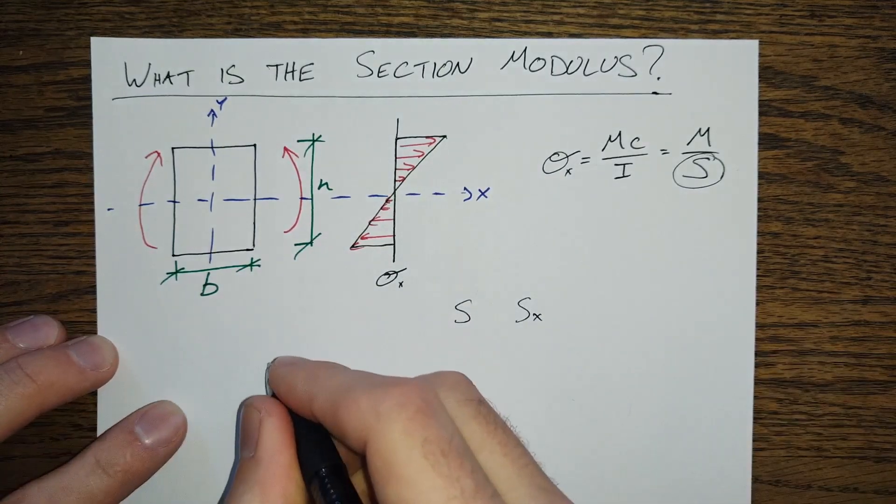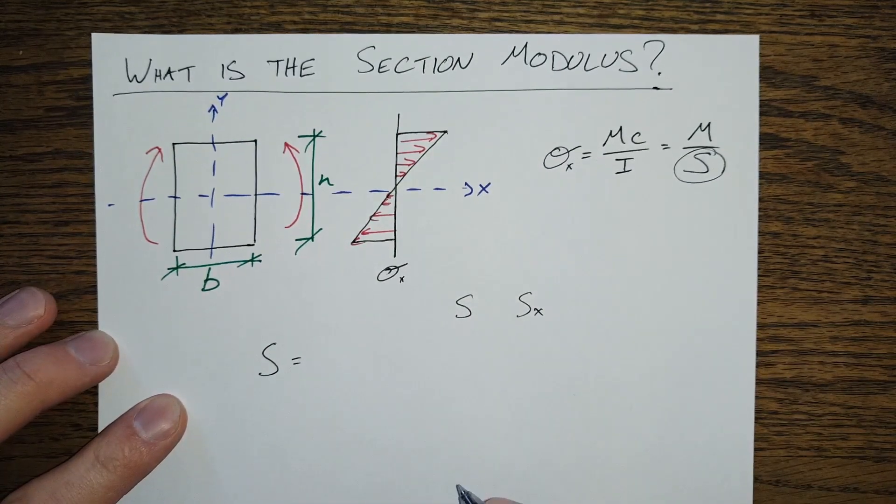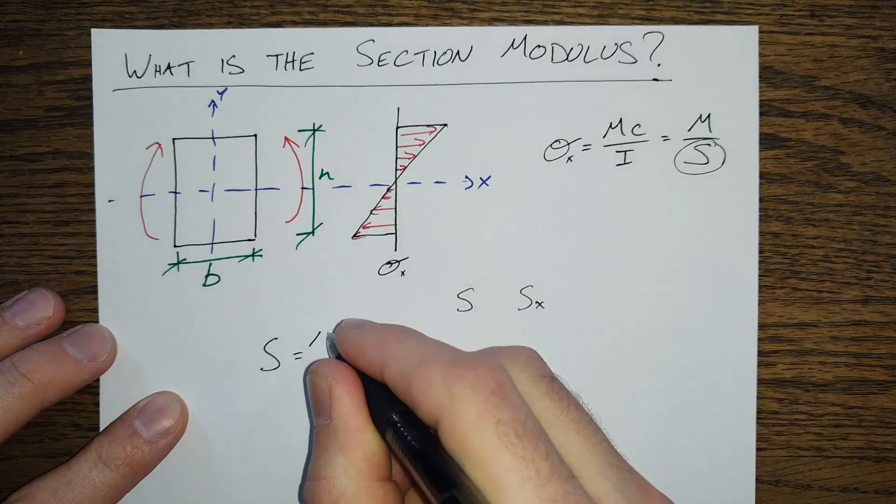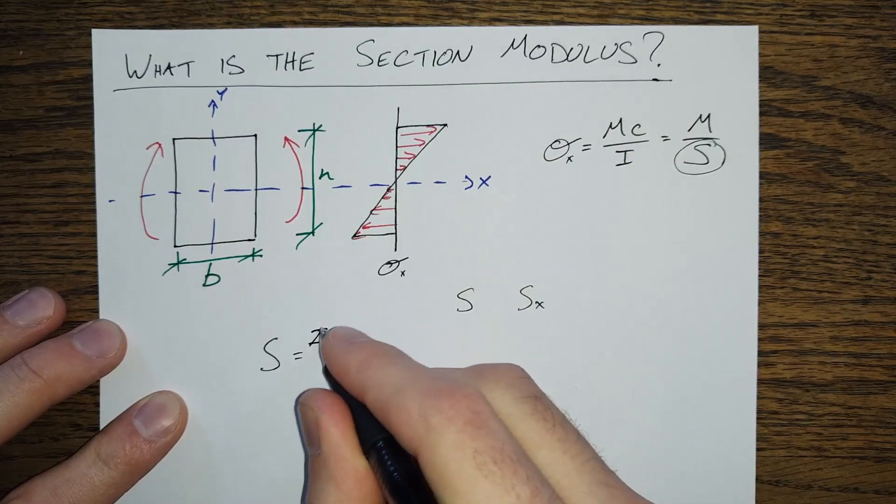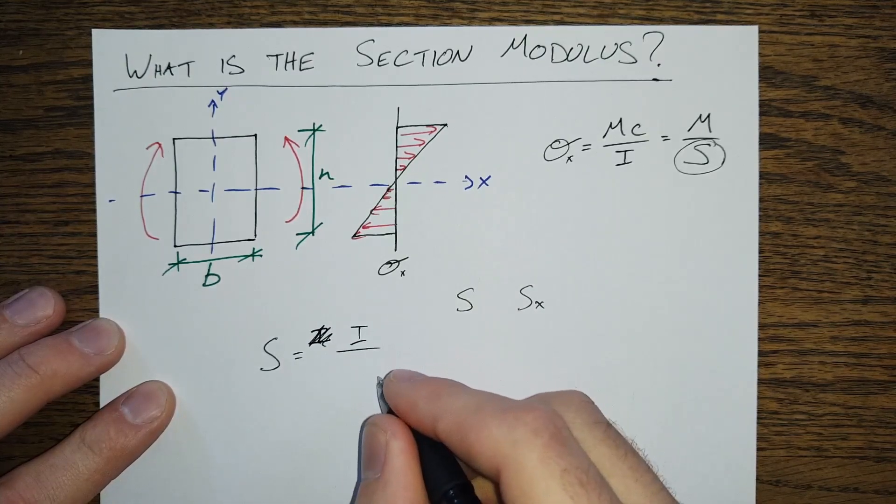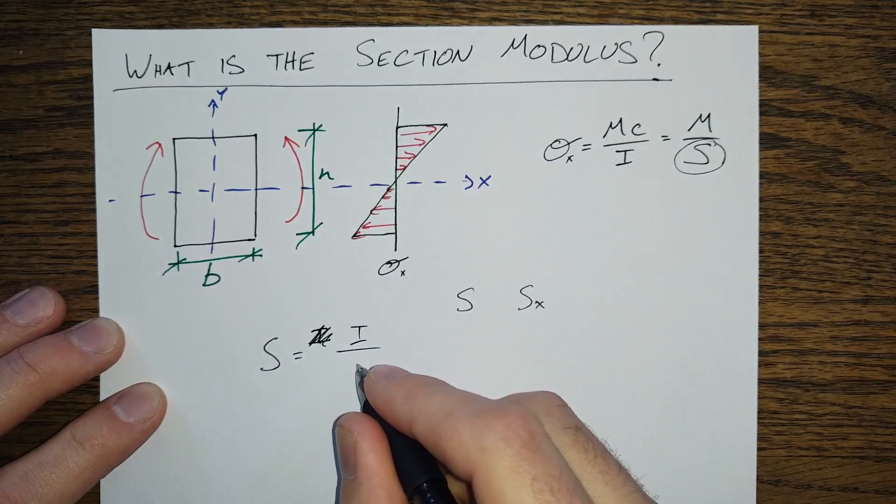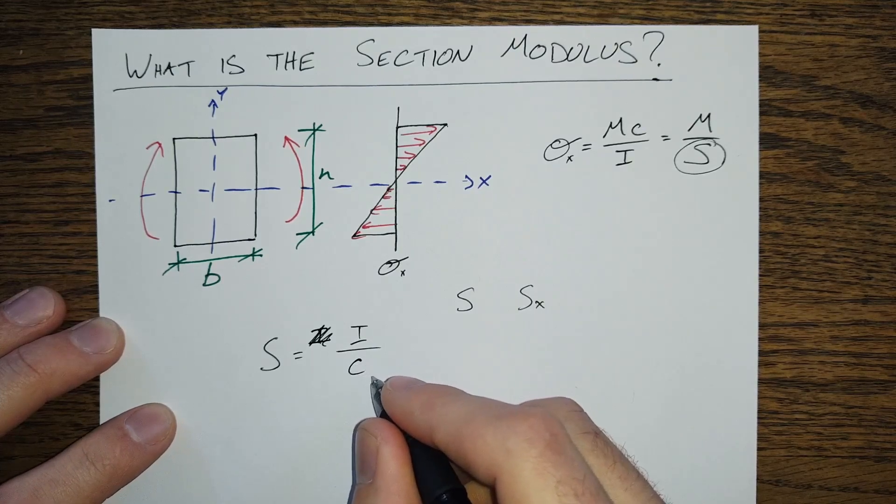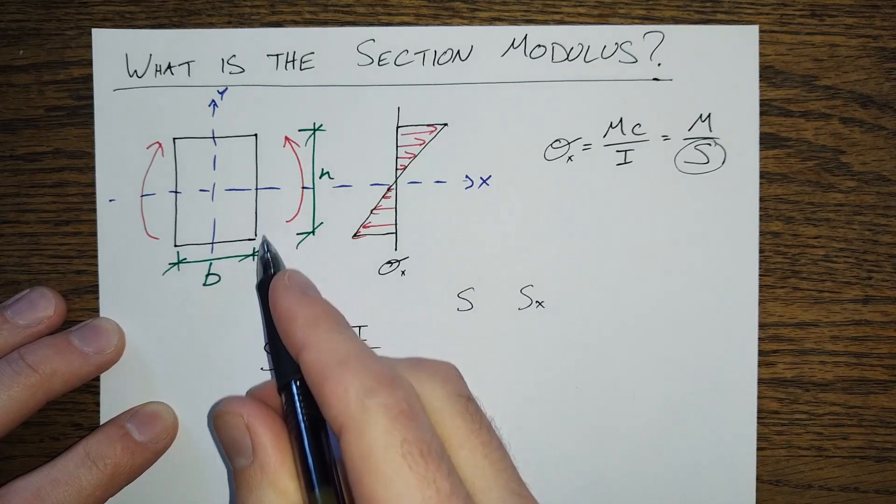The section modulus is equal to the moment of inertia, which we talked about last time, divided by the distance out to the ultimate fiber, or the extreme fiber.